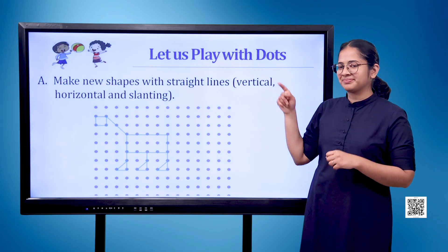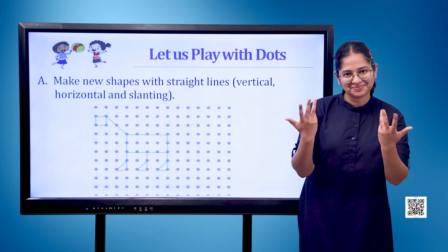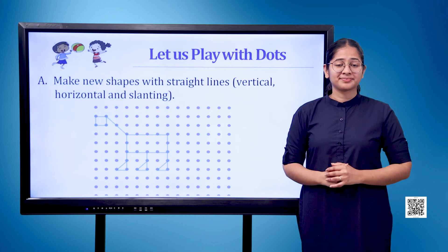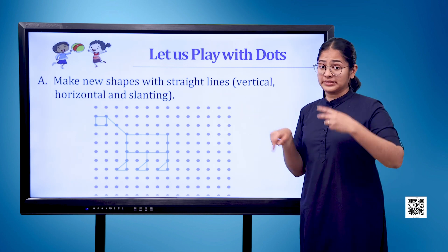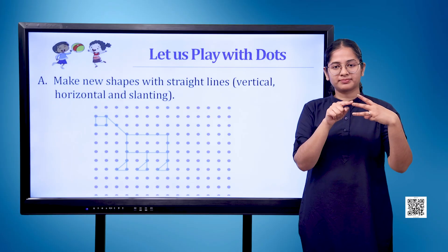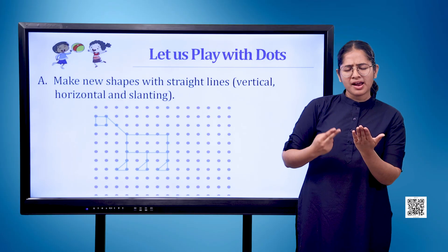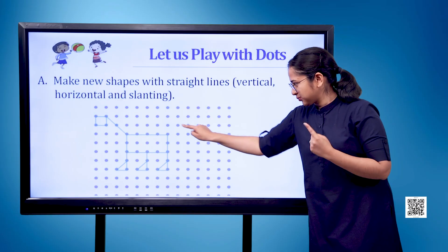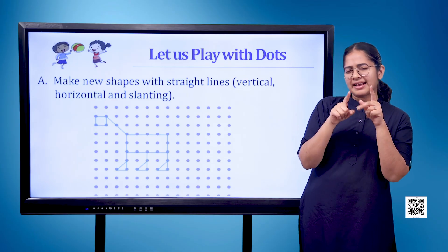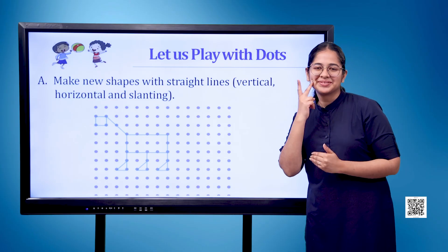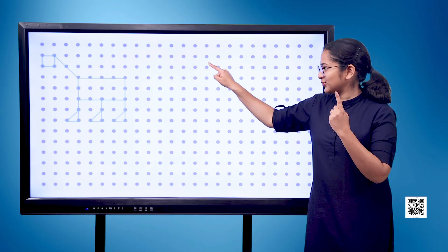Let us play with dots. A. Make new shapes with straight lines — vertical, horizontal, and slanting. Here we can see a cluster of dots. Two shapes have been made by tracing along the dots. These shapes are of a giraffe and a cuboid.